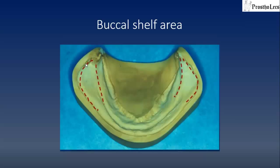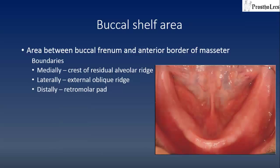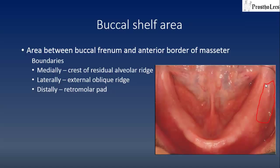The next anatomic landmark to be discussed is the buccal shelf area. The area marked by the red dotted line in this picture of a mandibular cast depicts the buccal shelf area. The buccal shelf area is basically the area between the buccal frenum and the anterior border of the masseter. The crest of the residual alveolar ridge is present laterally as the external alveolar ridge, and distally is the retromolar part. This area is known as the buccal shelf area and extends on both sides.